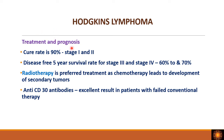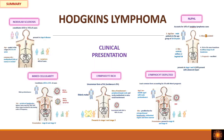Regarding treatment: stage 1 and 2 have a 90 percent cure rate, while stage 3 and 4 have a five-year survival of 60 to 70 percent. Radiotherapy is preferred over chemotherapy because chemotherapy can lead to development of secondary tumors. Anti-CD30 antibodies give excellent results in patients who have failed conventional therapy.